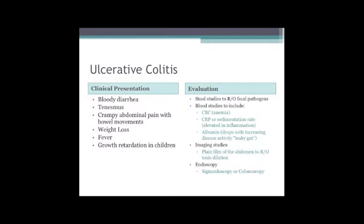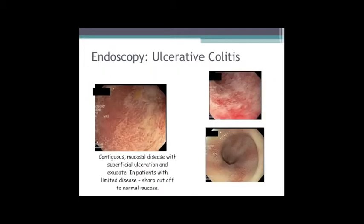Evaluation is very similar. If a patient comes in acutely, do a plain film to rule out toxic dilatation, but endoscopy will really help make the diagnosis. With Crohn's we saw punched-out linear ulcers; with UC it looks like a burn - superficial, red, with a lot of mucus and mucopuffs. As you move on you'll get a cutoff to normal mucosa in patients with limited left-sided disease.